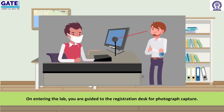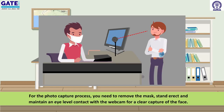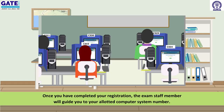On entering the lab, you are guided to the registration desk for photograph capture. For the photo capture process, you need to remove the mask, stand erect, and maintain eye-level contact with the webcam for a clear capture of your face. Once you have completed your registration, the exam staff member will guide you to your allotted computer system number.